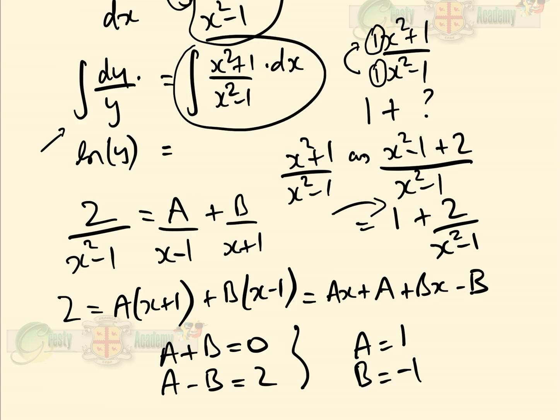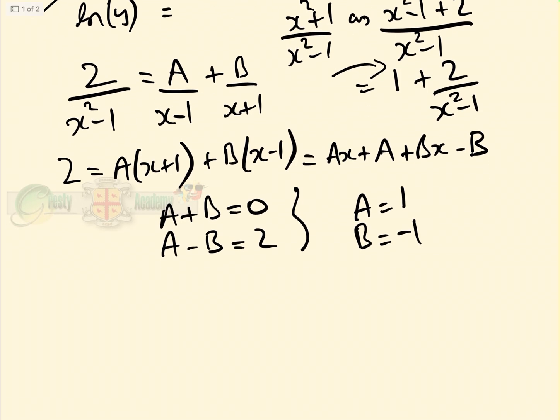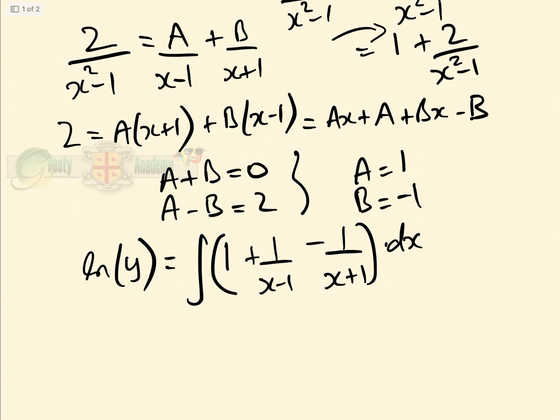Finally, we can go back to our right-hand side and rewrite that. So we have log(y) on the left is equal to the integral on the right of 1 + 1/(x - 1) - 1/(x + 1) dx. Now we can integrate that, which equals x + log(x - 1) - log(x + 1) plus our constant of integration.